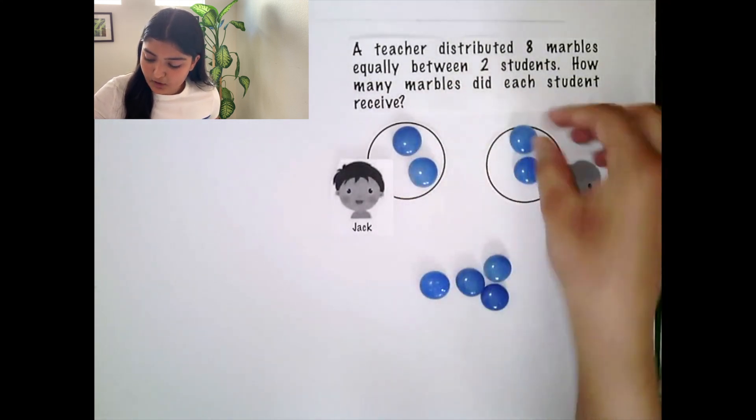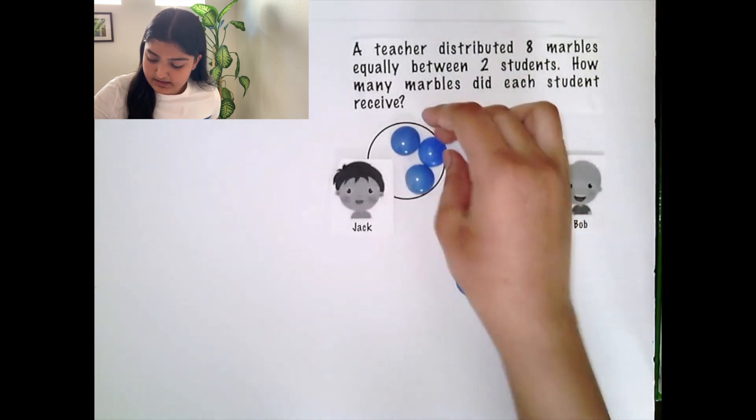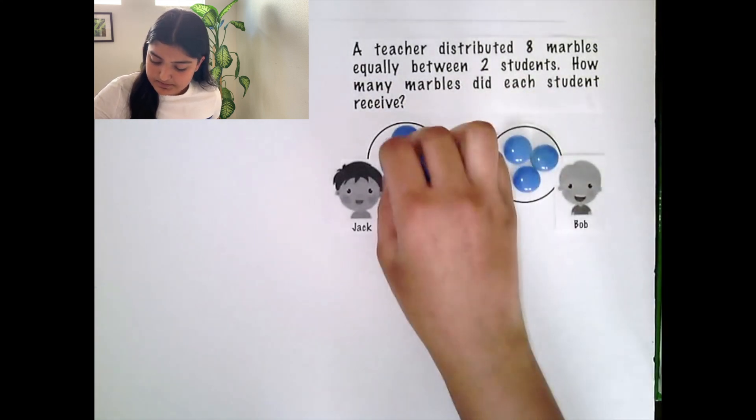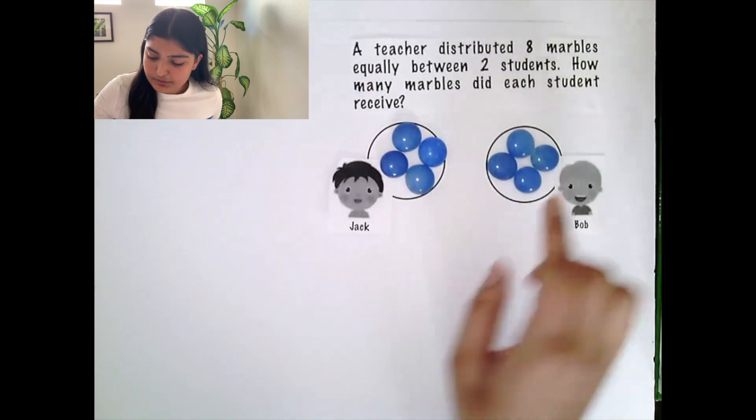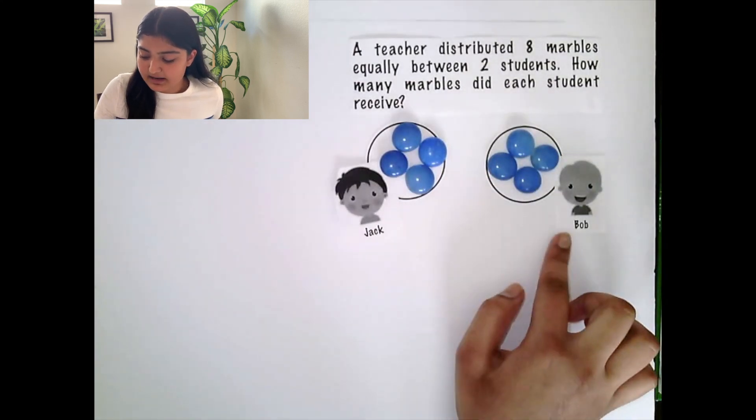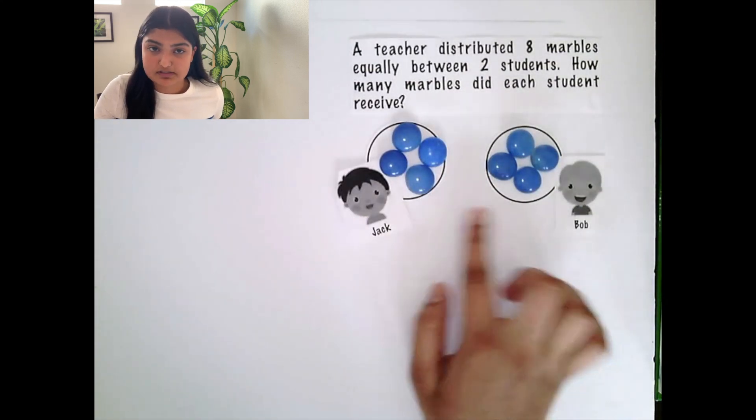And if we continue placing marbles and distributing them between the 2 students, we see that for both Jack and Bob, we both have 4 marbles each.